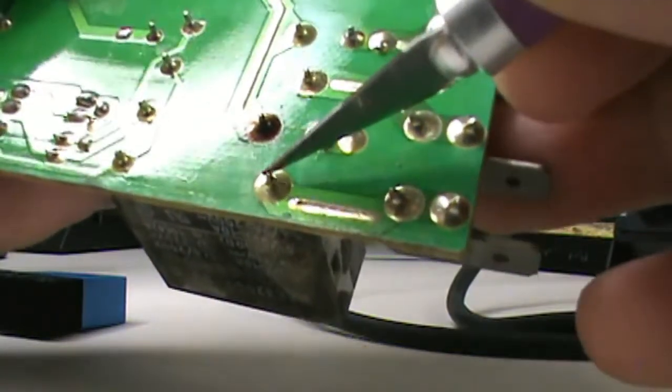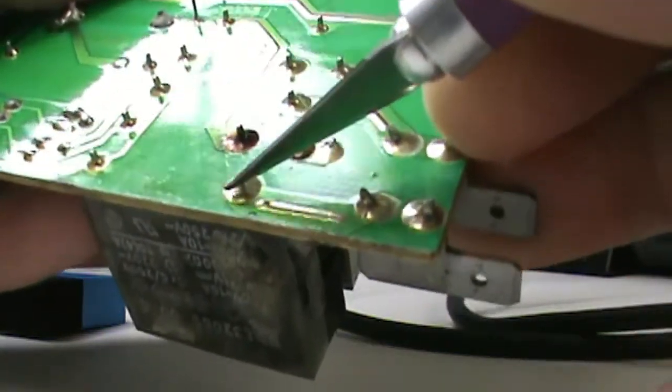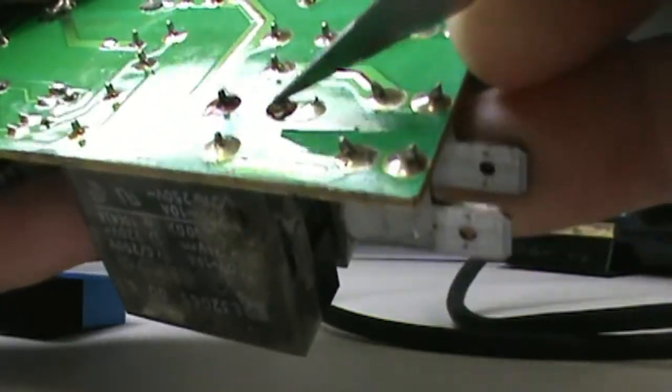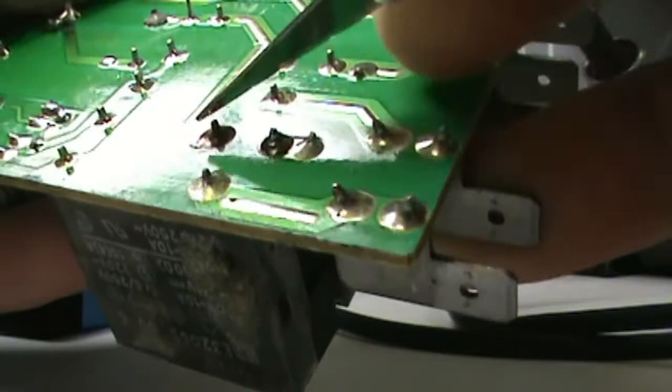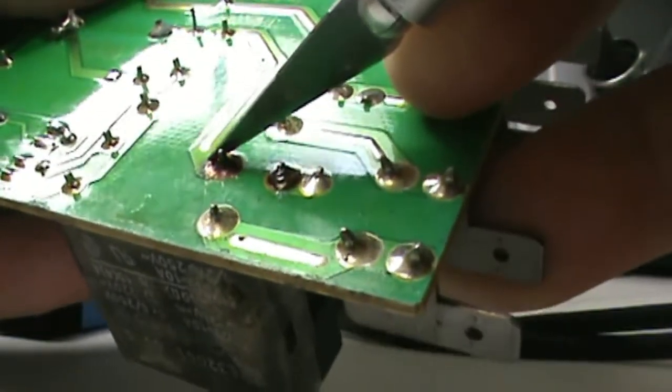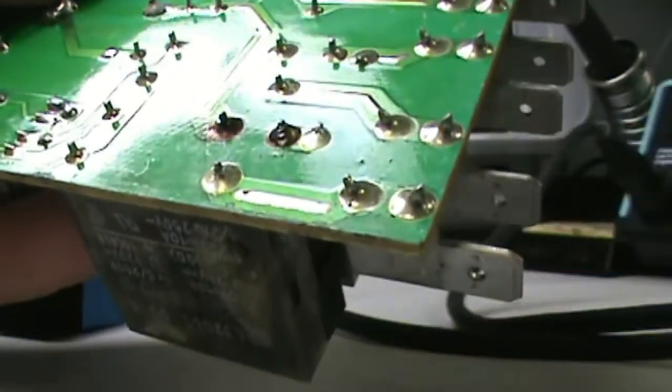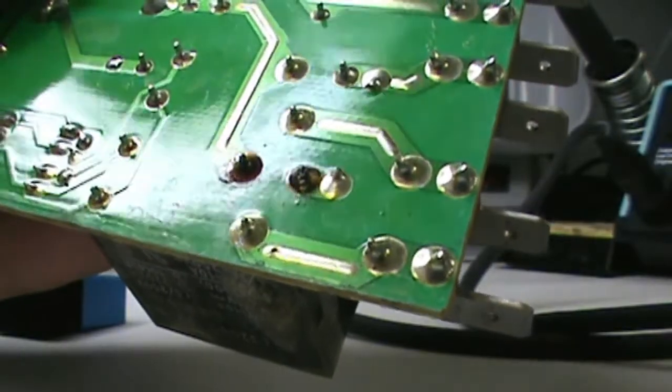So to measure the resistance take an exacto knife and scrape off a little bit of that conformal coating that's on these contacts then you can throw a meter on here and you can see if the contacts have failed which I'm sure they have.